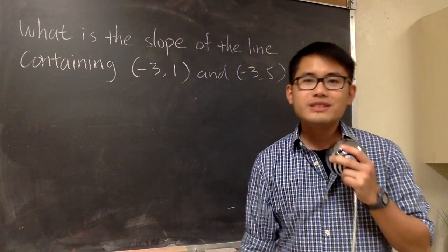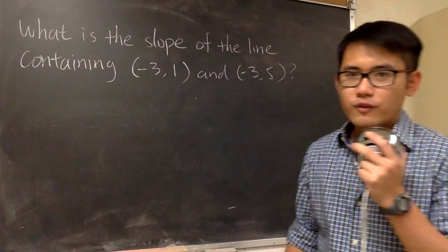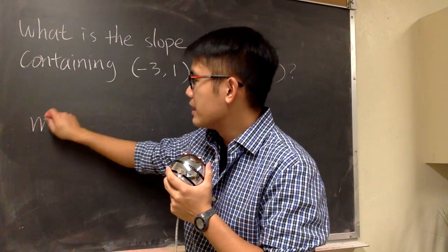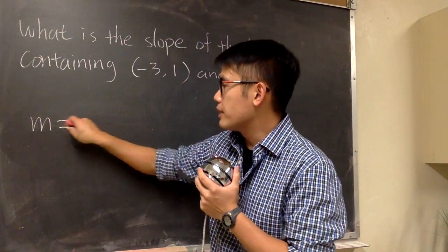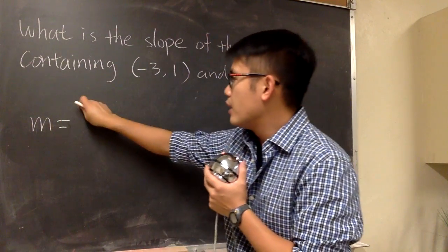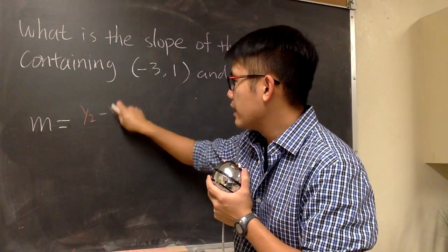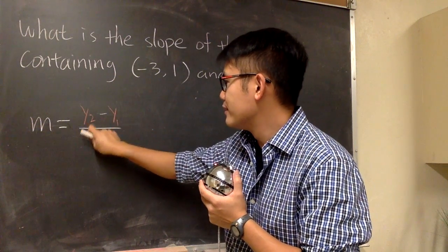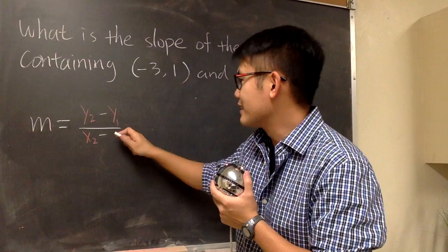We are given two points, therefore we have to use the slope formula, and this is something that we have to remember. M stands for the slope, and the formula tells us that we are going to have y2 minus y1, and this is over x2 minus x1.